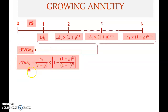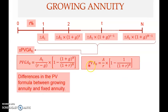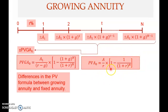The PVGA formula looks a bit complicated, but it is similar to the ordinary annuity present value formula. The ordinary annuity PV is A divided by R, multiplied by [1 − (1+R)^(−N)]. Note that (1+R)^(−N) is the same as 1 over (1+R)^N. These two formulas are essentially the same — just written slightly differently — so we can directly compare them.